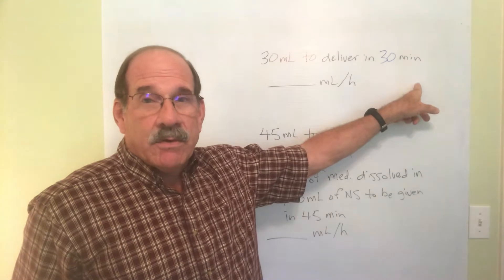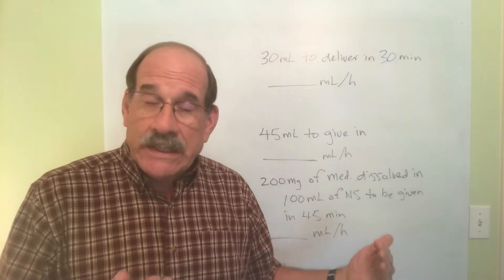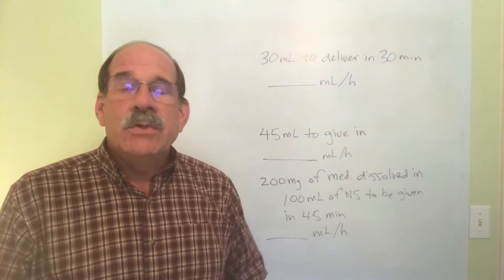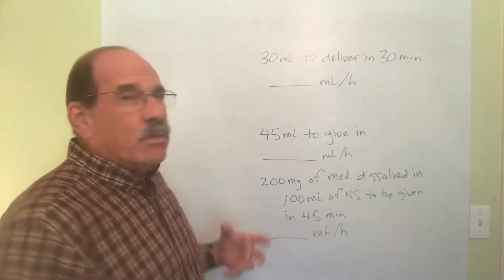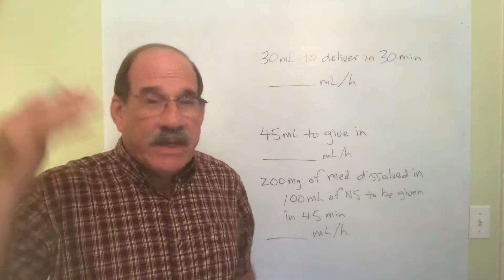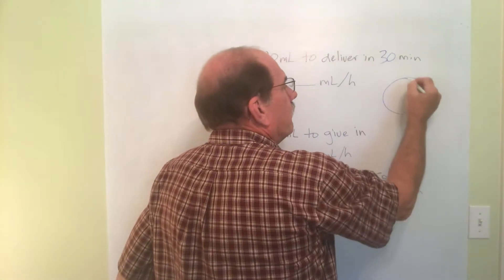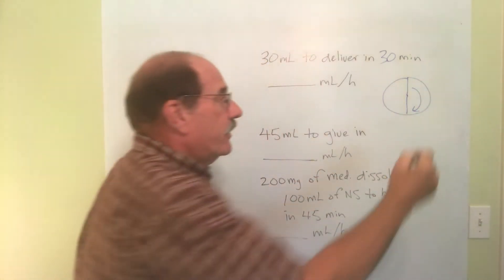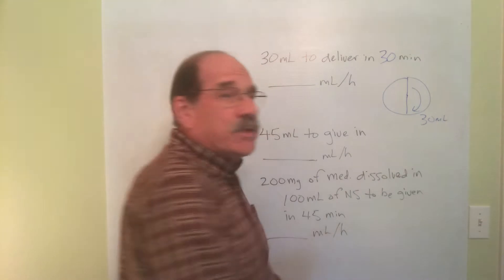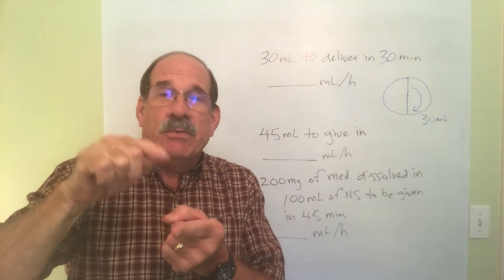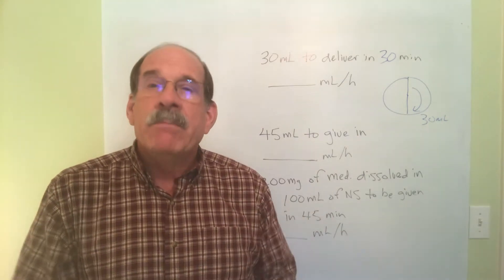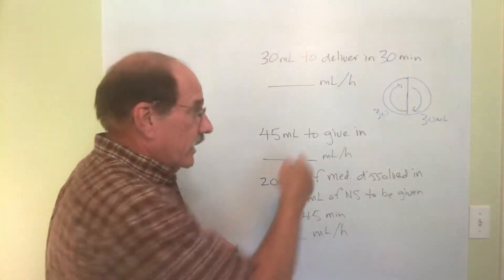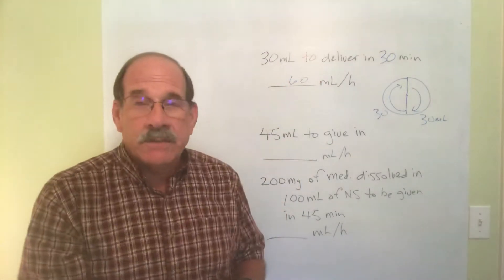If I give 30 milliliters in 30 minutes, that's a half hour. If I kept it going for the whole hour, I'd give twice that — 60 milliliters in the entire hour. Here's a clock: in 30 minutes the hand goes halfway around, and I give 30 milliliters. Another 30 minutes gives 30 more milliliters, so in the whole hour I would give 60 milliliters per hour.